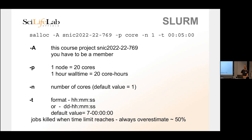When you overestimate the booking time and the job finishes early, you only pay for the time it actually ran. So always overestimate. If you underestimate and there's only one millisecond left for your analysis to finish, but time is up, it gets killed — it can't check how much time is left. So it gets treated as if you were trying to steal resources and everything shuts down. The time is specified in hours, minutes, and seconds, or you can specify days — so 7-00:00:00 is a full week.